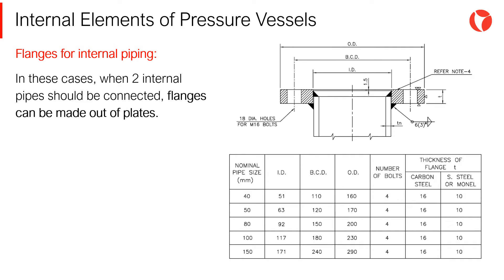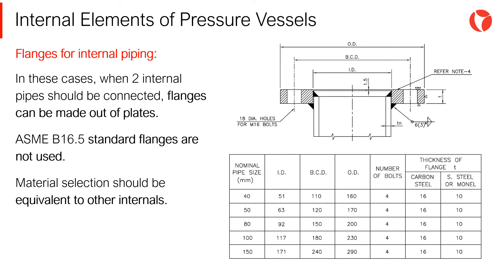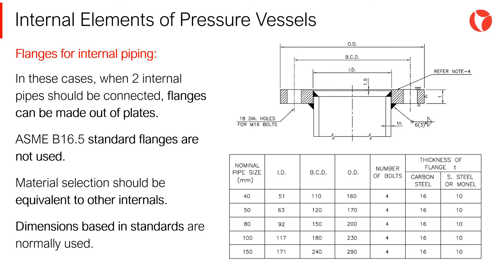When internal tubes, distributors, baffles, etc. need to be connected, flanges can be made out of plates. Since flanges installed inside the pressure vessel are not under pressure, ASME B16.5 standard flanges are not used. The material selection should be equivalent to the rest of the internal elements. To determine the dimensions of these parts, standards are normally used, like the one shown on the screen.